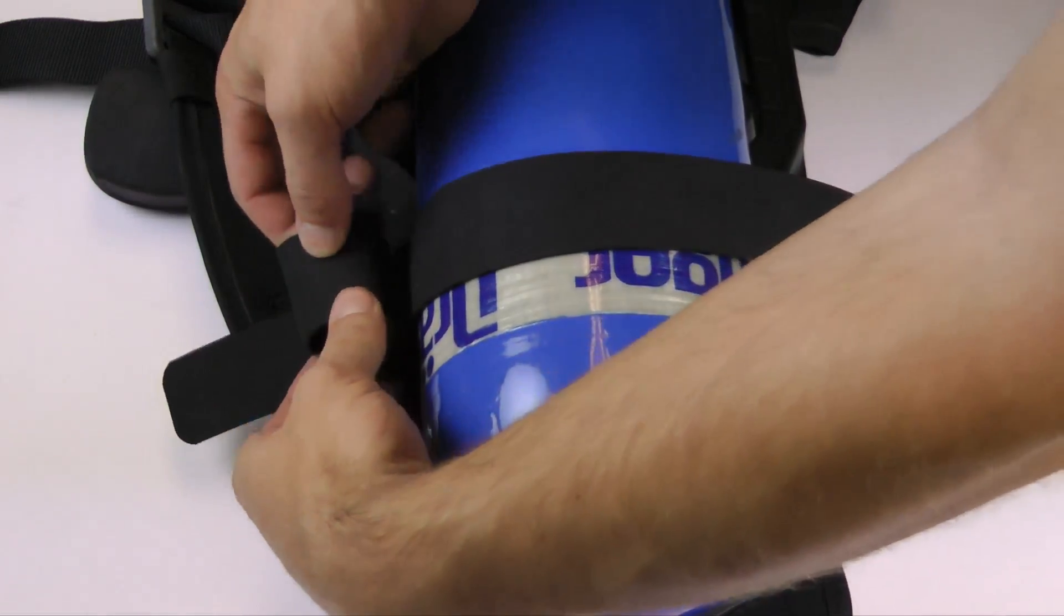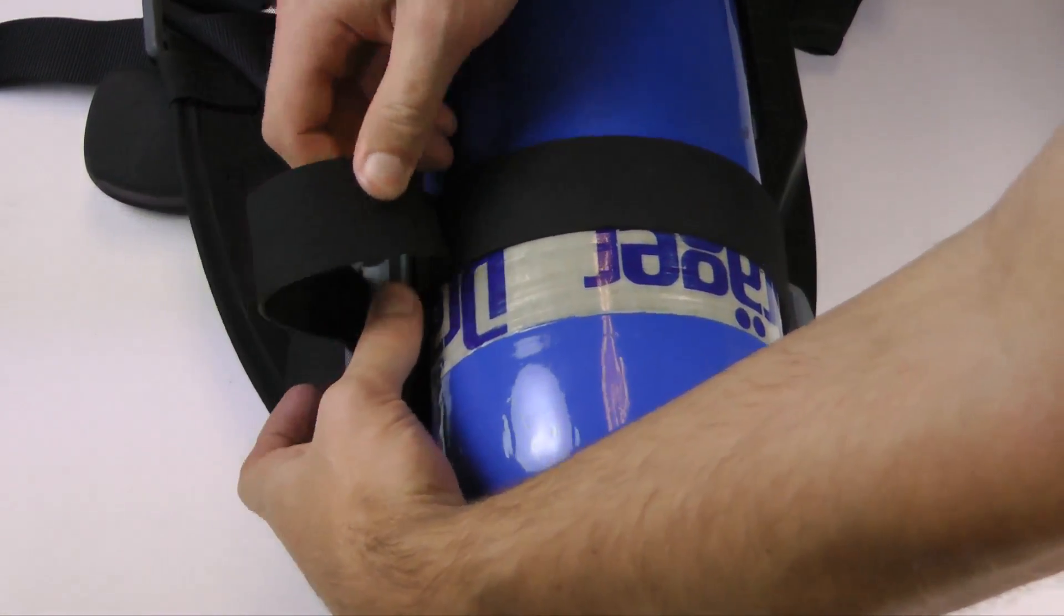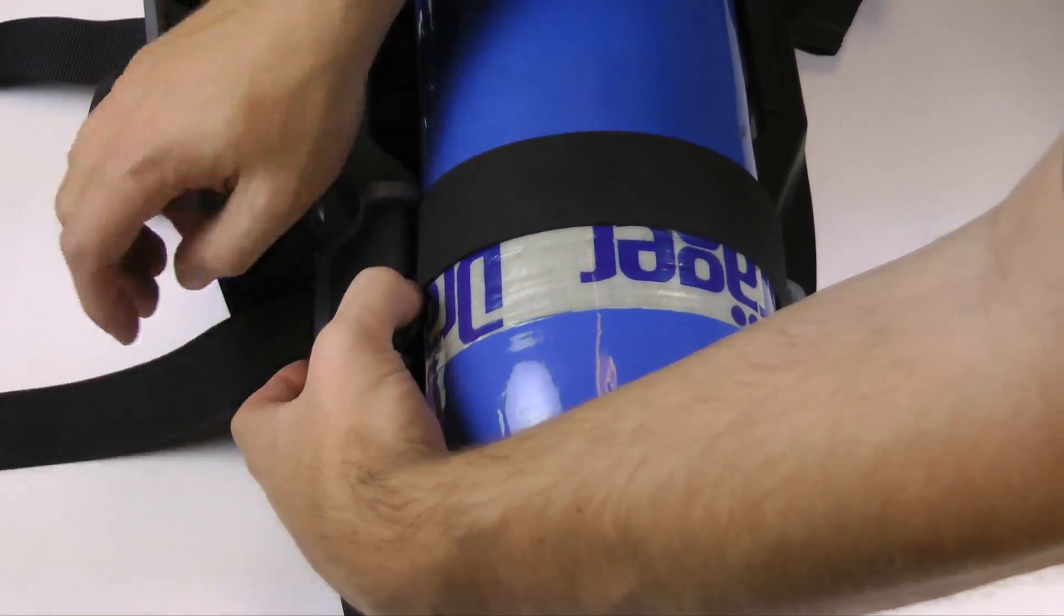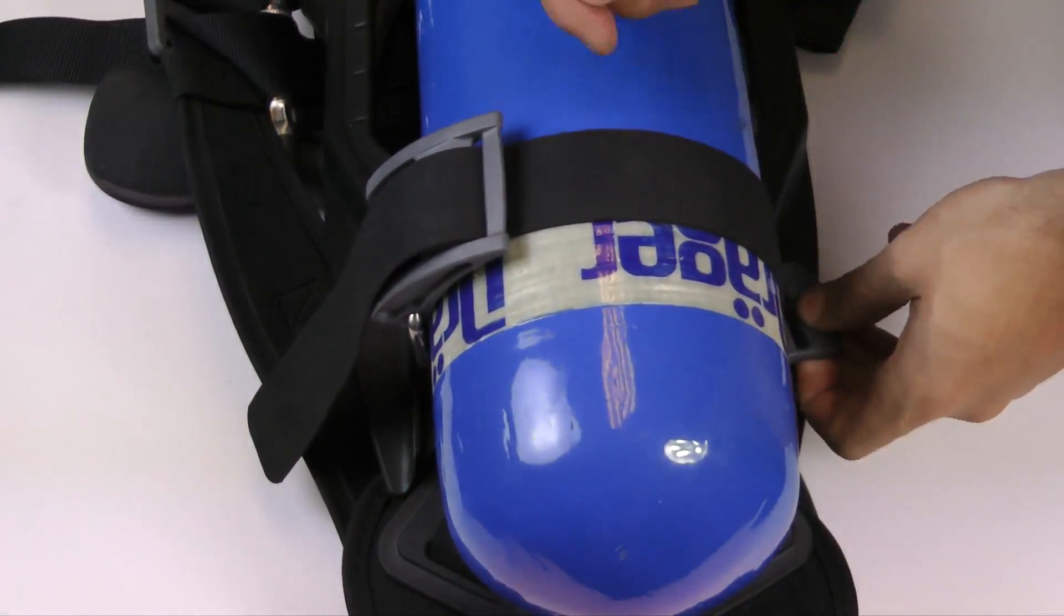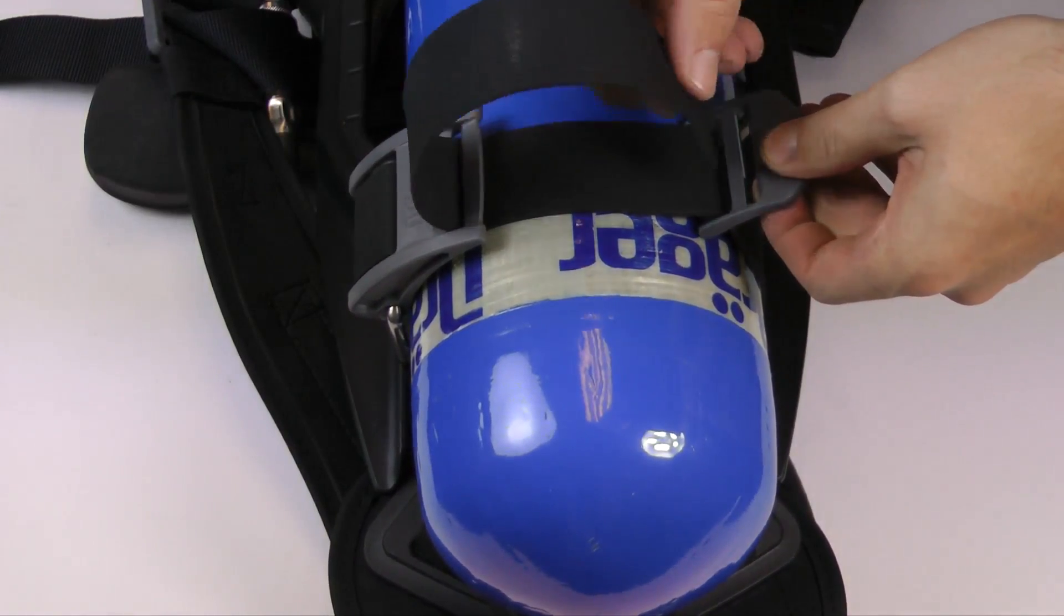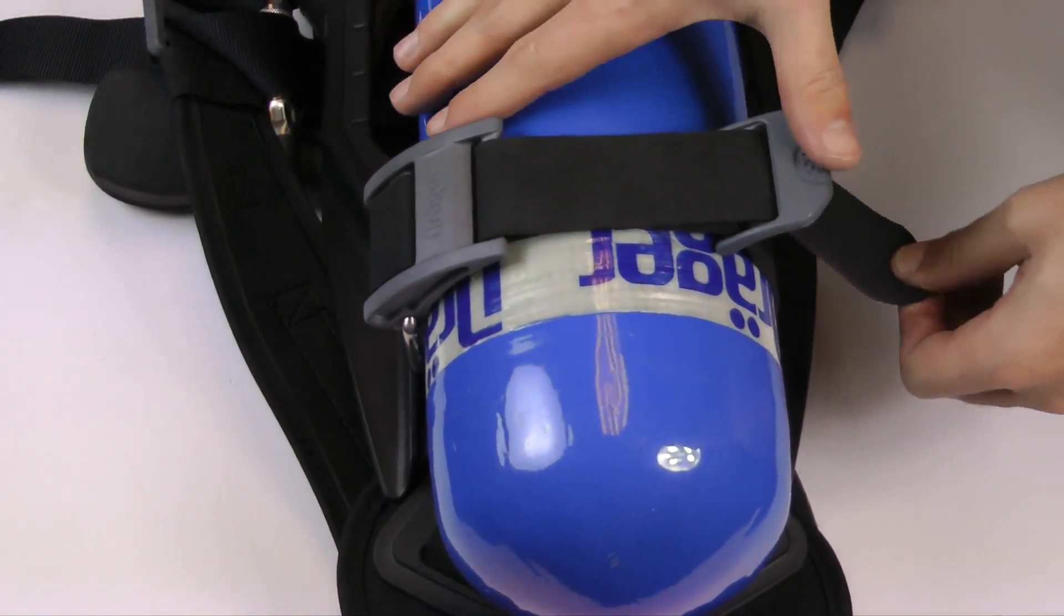Next, tighten the cylinder strap by pulling the slack through the main buckle, then flip the buckle into place to tighten the strap on the cylinder. Use the small buckle to tuck in the strap.